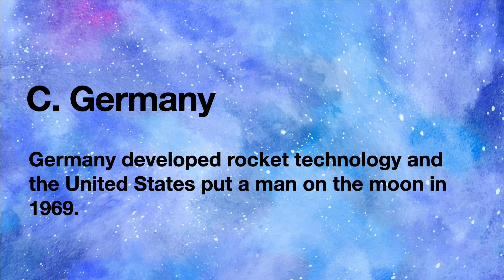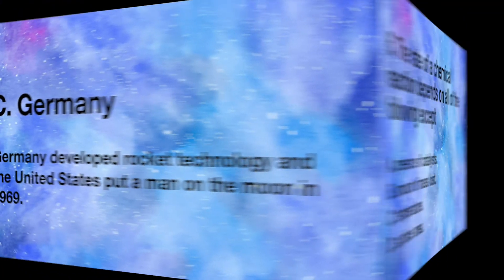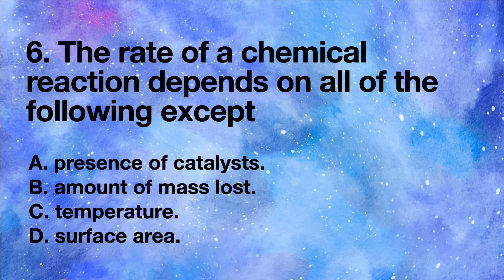C Germany. Germany developed rocket technology and the United States put a man on the moon in 1969. The rate of a chemical reaction depends on all of the following except: A presence of catalysts, B amount of mass lost, C temperature, D surface area.